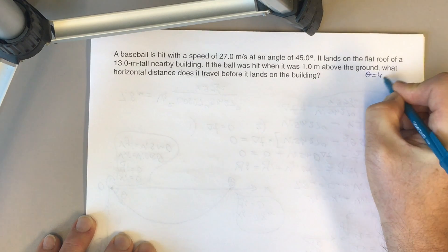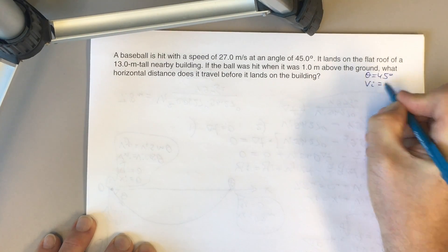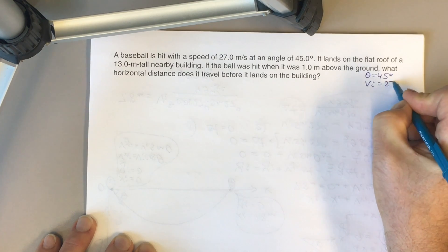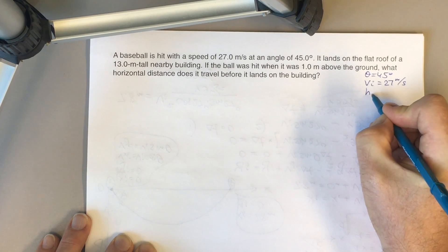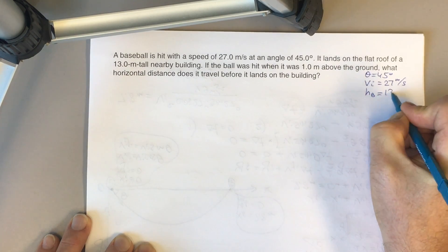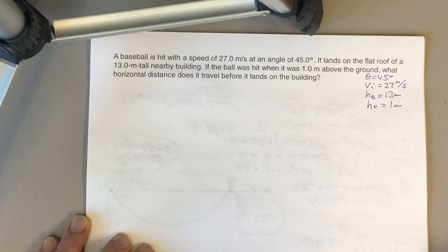We have angle theta 45 degrees with respect to horizontal. We have initial speed of the baseball 27 meters per second. And we have two other numbers: the height of the building, 13 meters, and the initial height, 1 meter. So let's draw the picture.